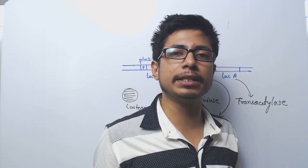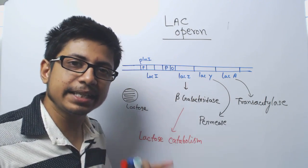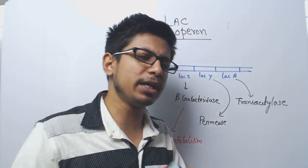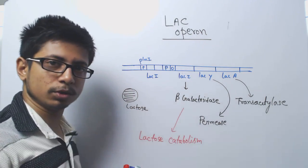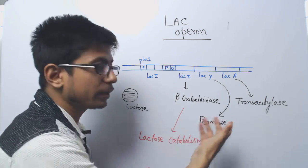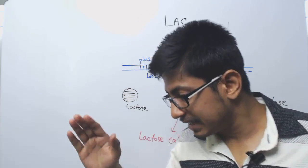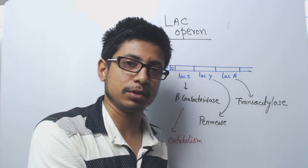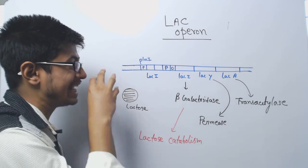Now let's imagine there is no lactose present in the environment and none inside the bacterial cell either. Is it good to turn this operon on? The answer is no — if there is no lactose, there is no need to produce beta-galactosidase. What would permease do if there is no lactose in the environment? So when there is no lactose, they want to turn off this operon. Lactose present: operon on. Lactose not present: operon off. It is a positive regulation created by the presence and concentration of lactose in the medium.